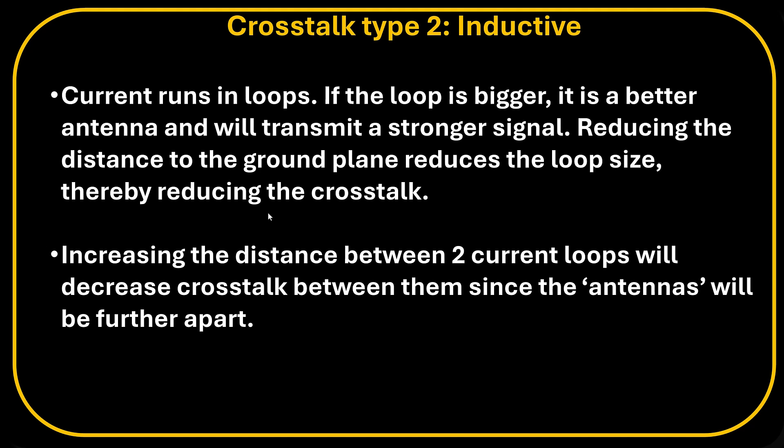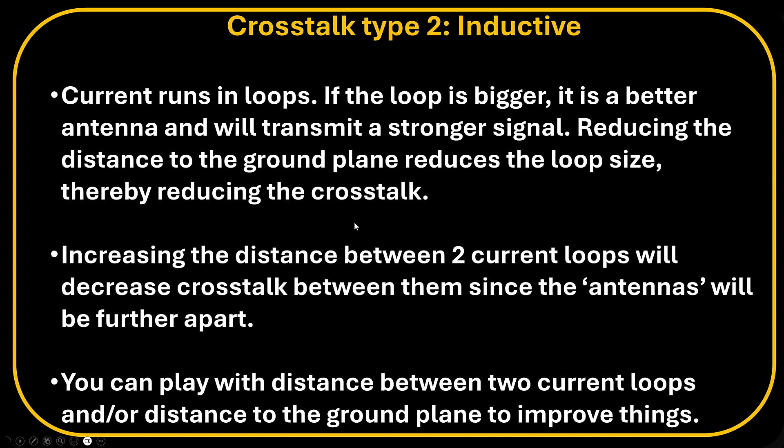Increasing the distance between two current loops will decrease crosstalk between them, since the antennas will be further apart. So you can play with the distance between the two current loops, and or the distance to the ground plane to improve things. If you do both at the same time, you'll get a very big improvement.